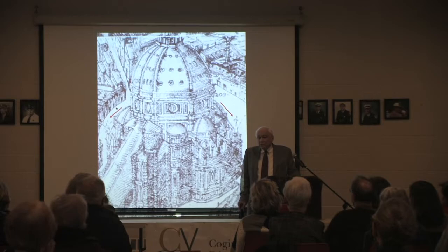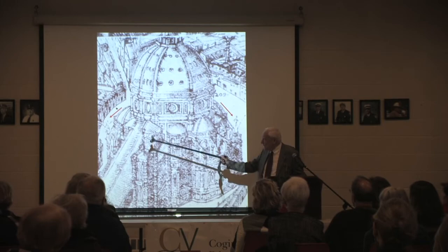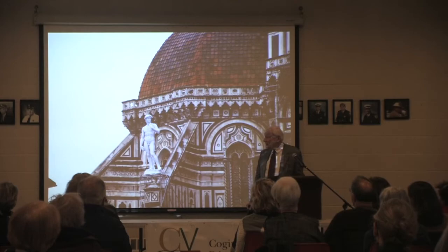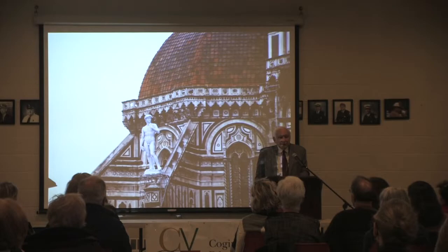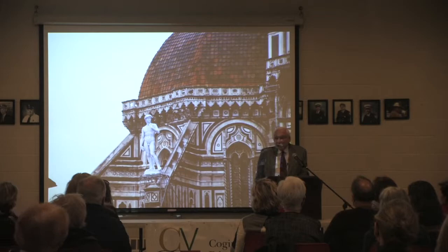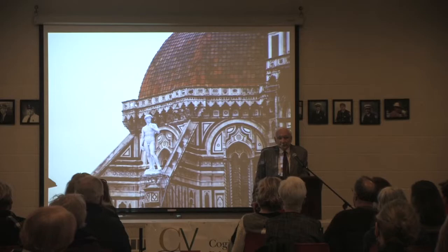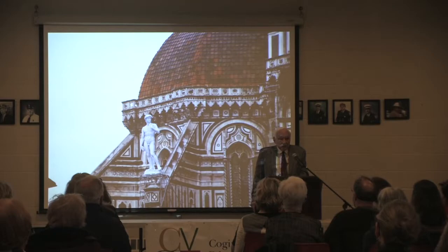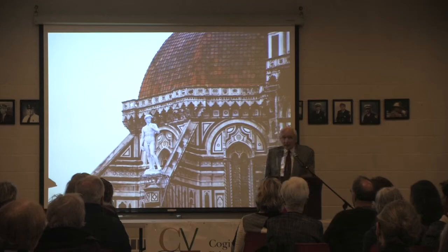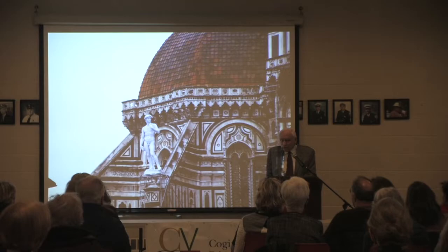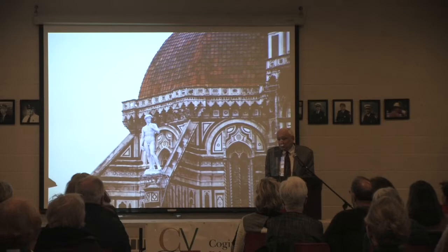It was for a statue meant to go on the buttress area of the Cathedral of Florence. Recently they made a fiberglass cast of the statue and placed it up there very briefly. So it is originally a commission for the cathedral, meant to be part of the religious art that decorates the facade, the side doors, and the buttress areas. So why didn't it get put up there? Why did it get taken away? And why do we see it now in this very strange location? There is a copy of it in front of the town hall.